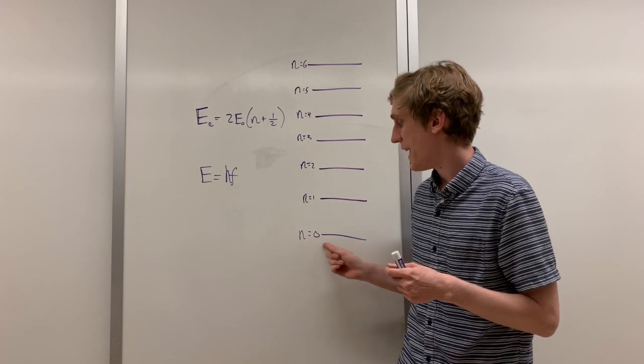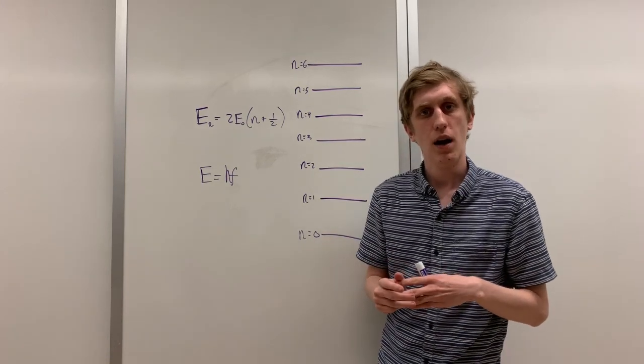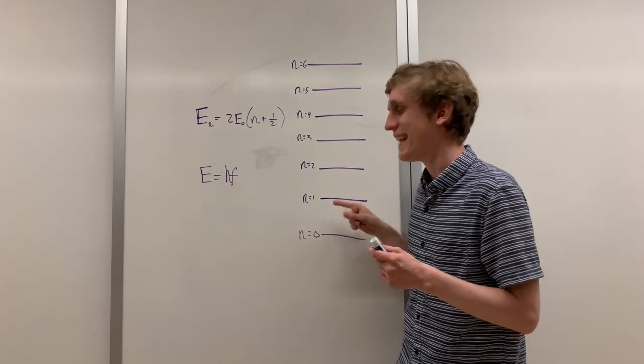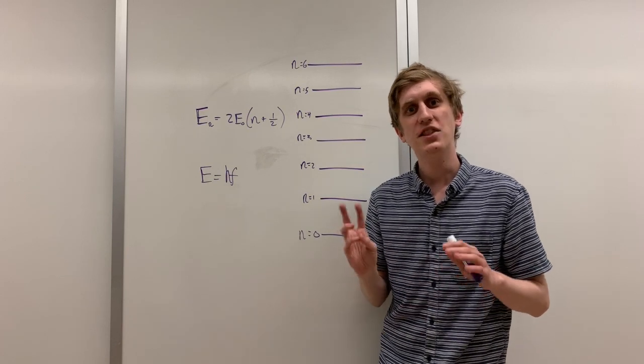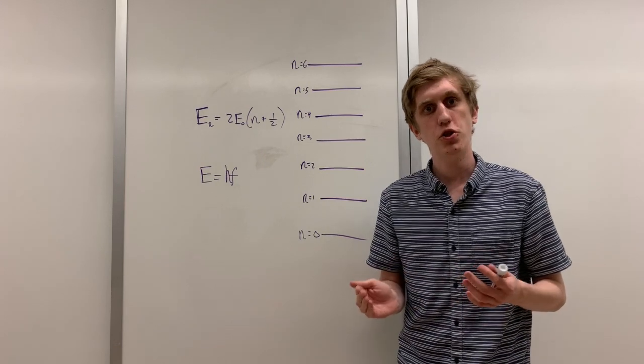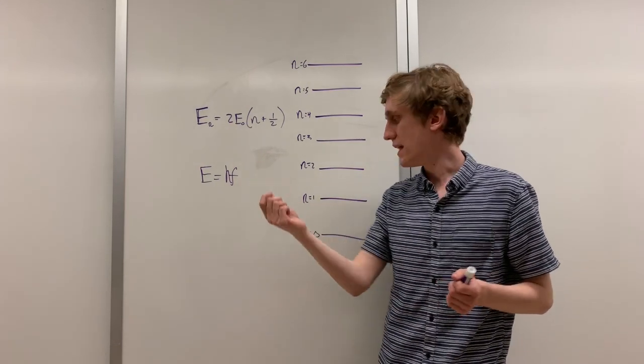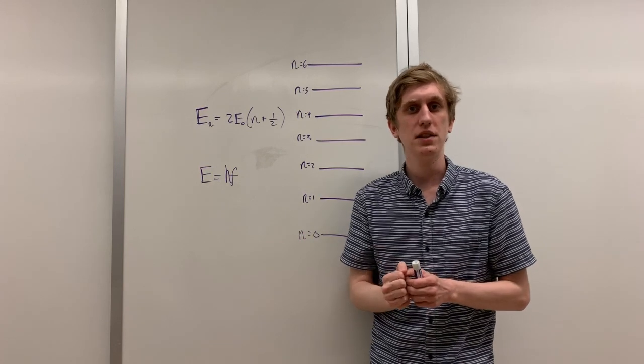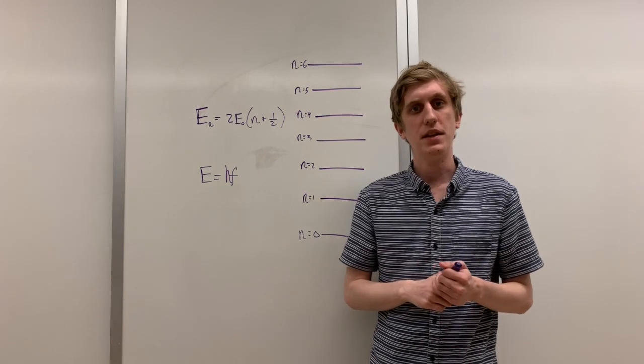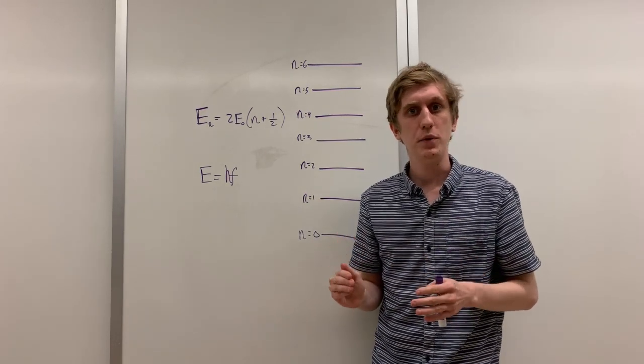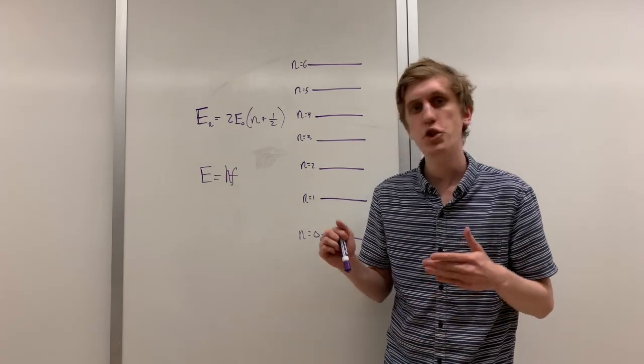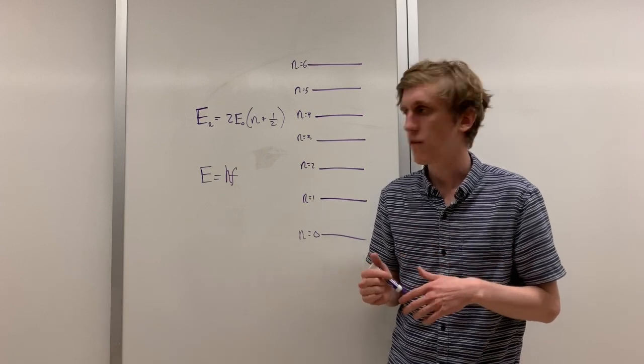We know that the energy of the lowest energy level in the harmonic oscillator is E-knot, and we know that the energy level of the first excited state of the harmonic oscillator is 3 E-knot. So the difference between those energy levels is just 2 E-knot. If a photon came in and hit the harmonic oscillator with exactly that amount of energy, the harmonic oscillator would be bumped up to this energy level. We could figure out then the frequency of the light wave that would be necessary to make this transition. Let's just plug in 2 E-knot for the energy and solve for the frequency.